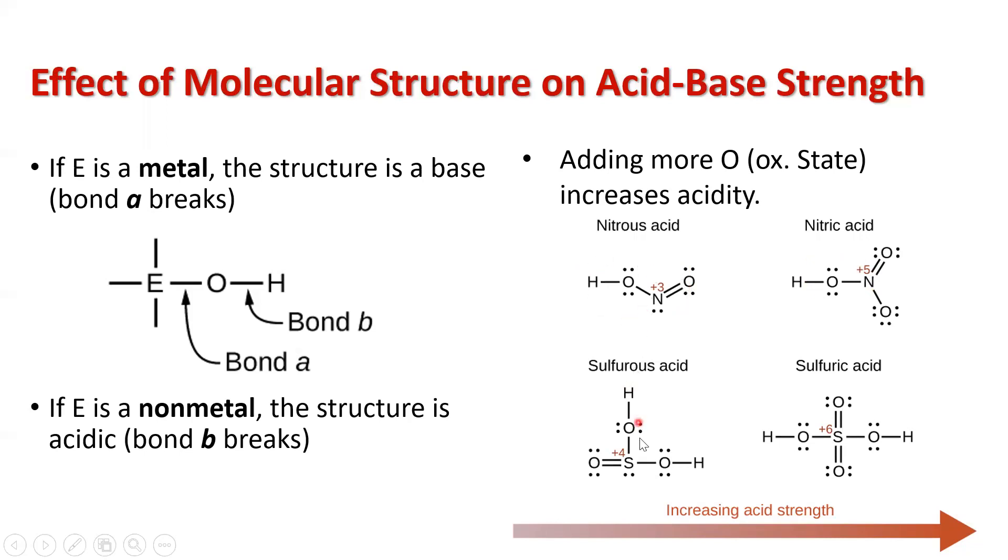If we were to look at sulfurous acid, SO3 is sulfite, and we have our two hydrogens on here to make H2SO3. This is sulfurous acid. This is SO4. This is sulfate bonded to hydrogen, so this is sulfuric acid.